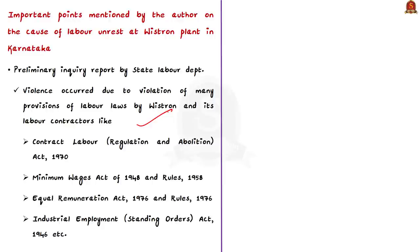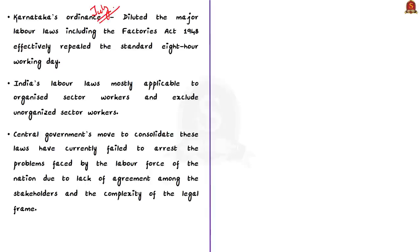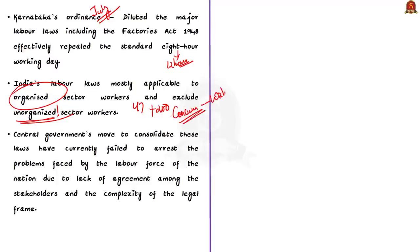Because of these issues, workers caused damages worth around 50 crores of rupees to the company. According to the state government's inquiry report, the violence occurred because Wistron had violated many provisions of labor laws including the Contract Labor Act, Minimum Wages Act, and Equal Remuneration Act. Additionally, the Karnataka government promulgated an ordinance in July diluting many labor laws — for example, effectively diluting the standard 8-hour working day, replacing it with a 12-hour day with overtime payments. India's labor framework has around 47 central laws and 200 state laws, but these are applicable only to the organized sector and exclude the unorganized sector, which employs the majority of India's workforce. Because of these unresolved concerns, workers attacked the company and over 100 people were subsequently arrested.